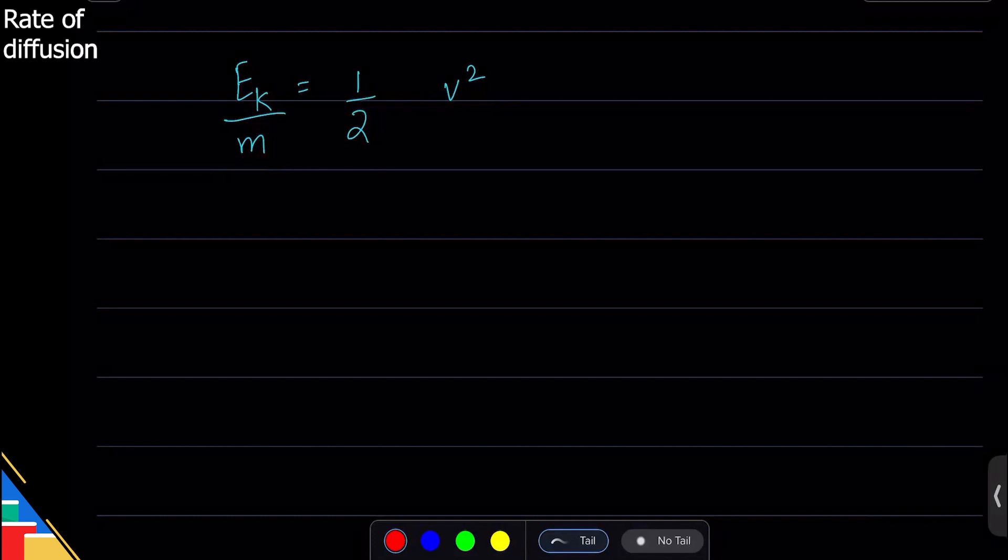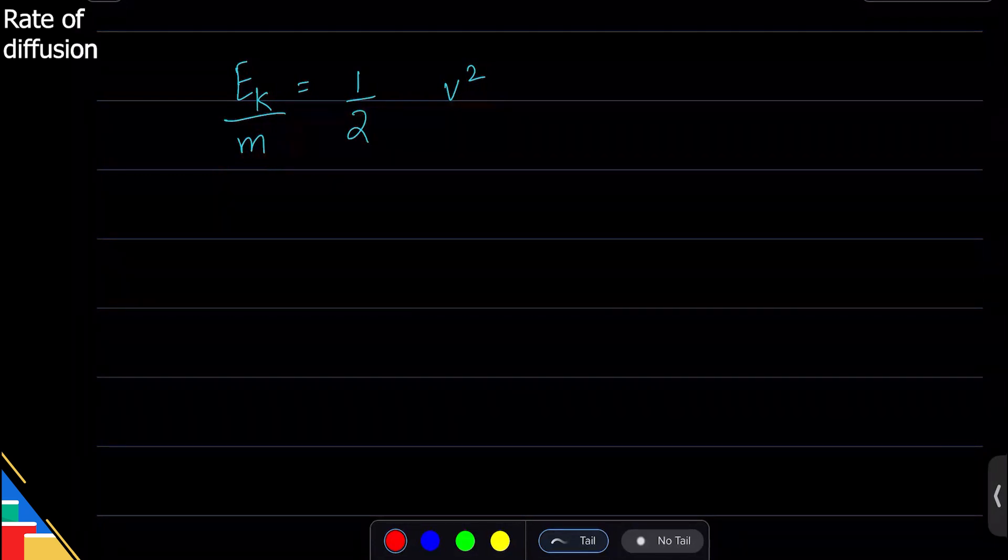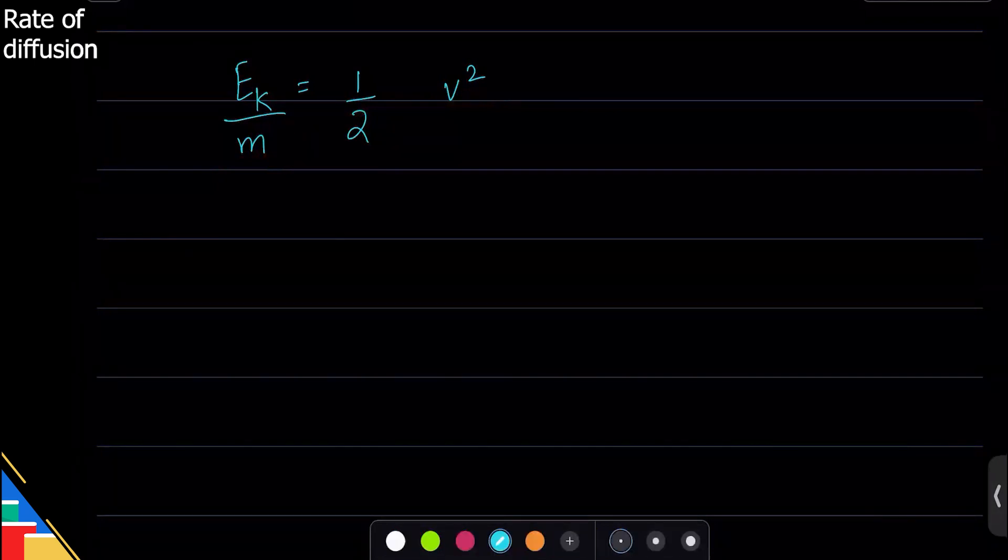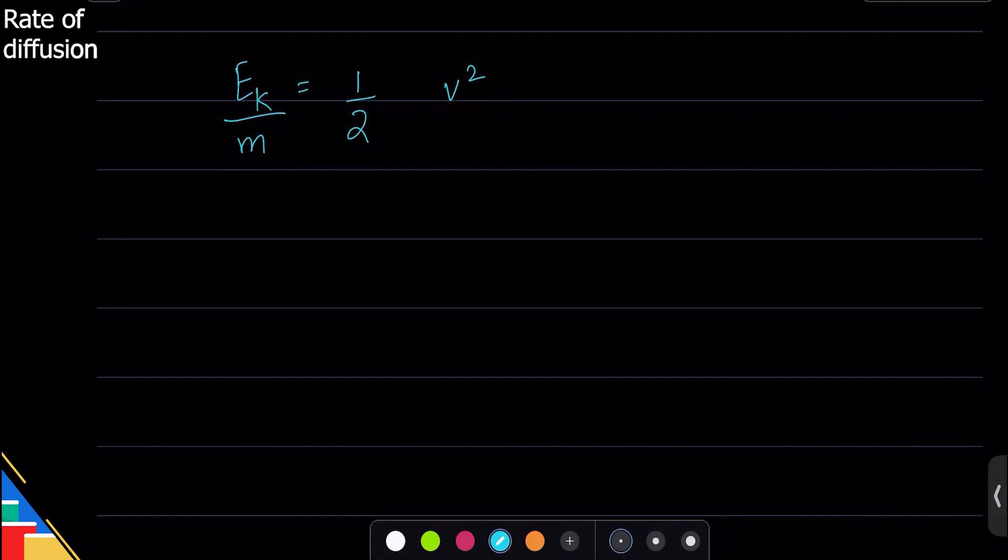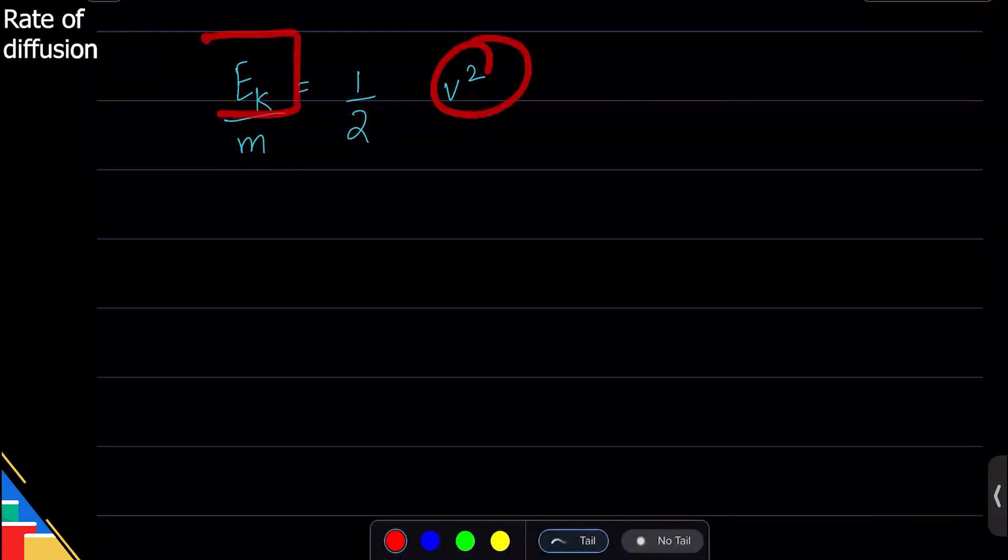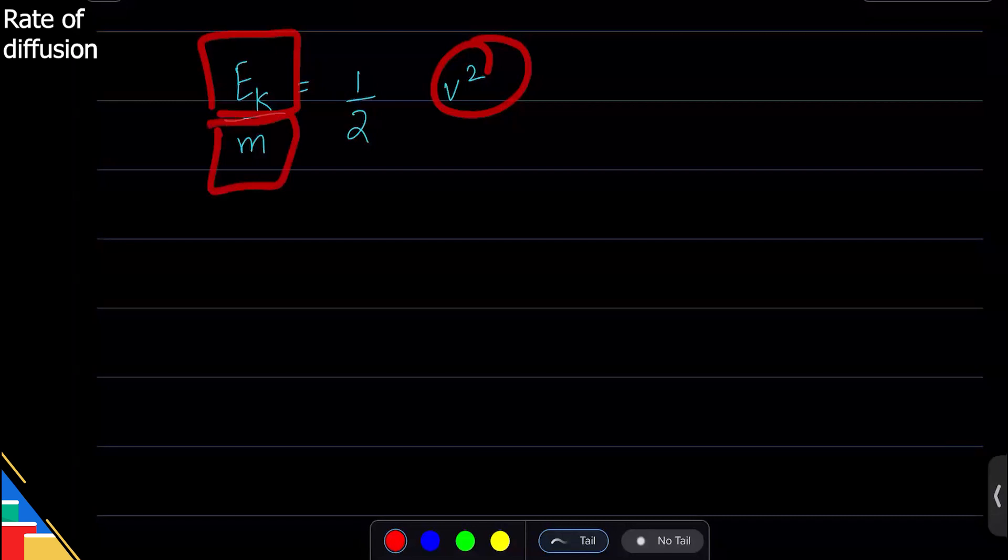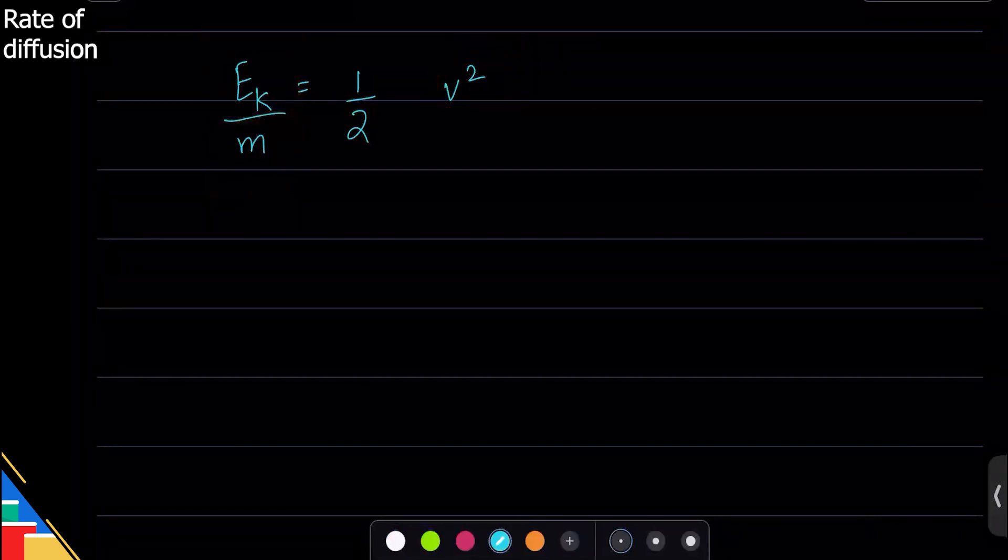All of them have average kinetic energy. So the speed of diffusion depends on two things: the kinetic energy of individual particle and the mass of individual particle. So for every particle the speed depends on kinetic energy that it has and the mass that it has.